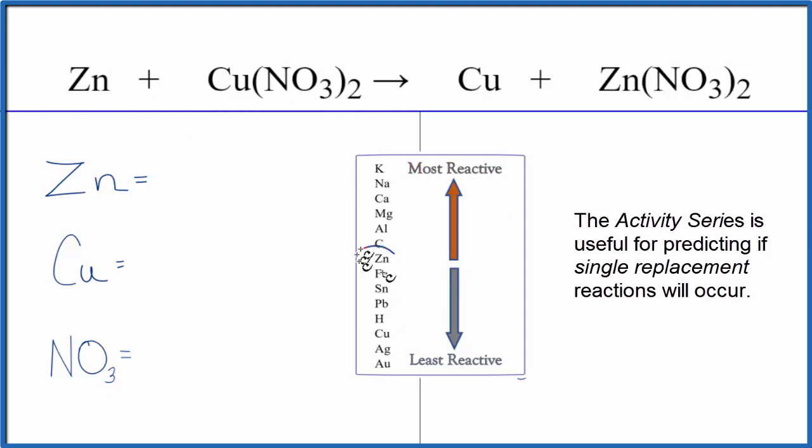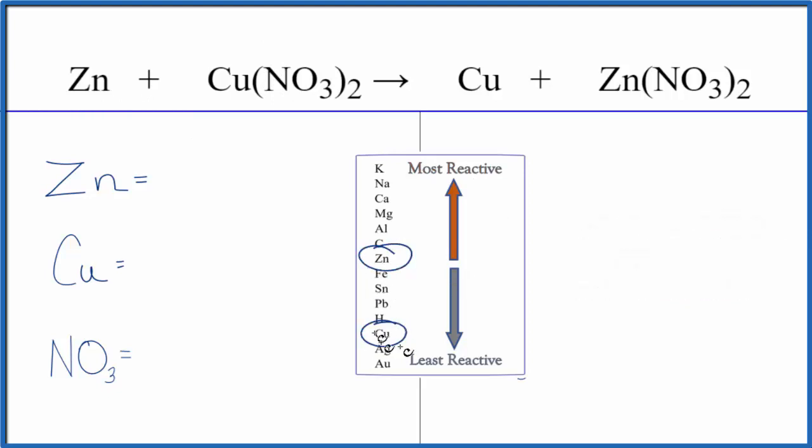You can see that zinc right here and then copper down here. Things higher up towards the top are more reactive. So the zinc, that's above the copper, is going to push the copper out. It's more reactive, so this reaction will take place.